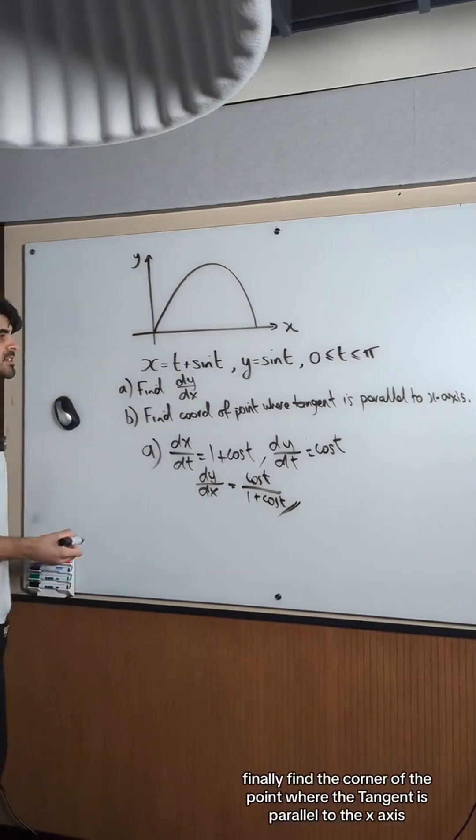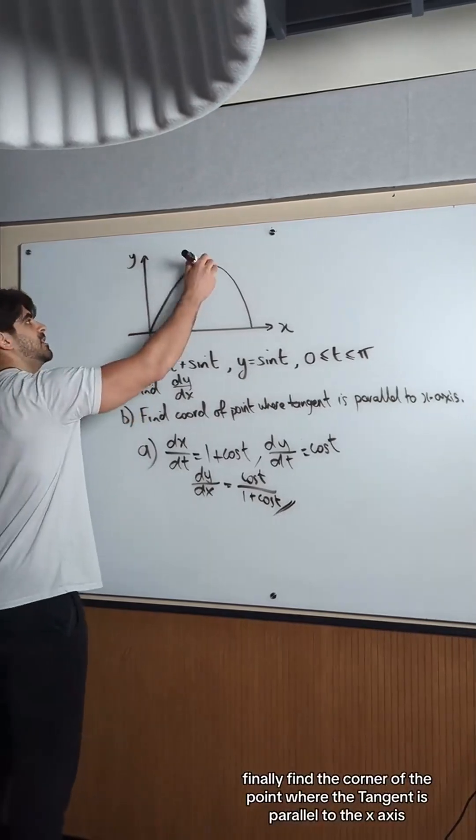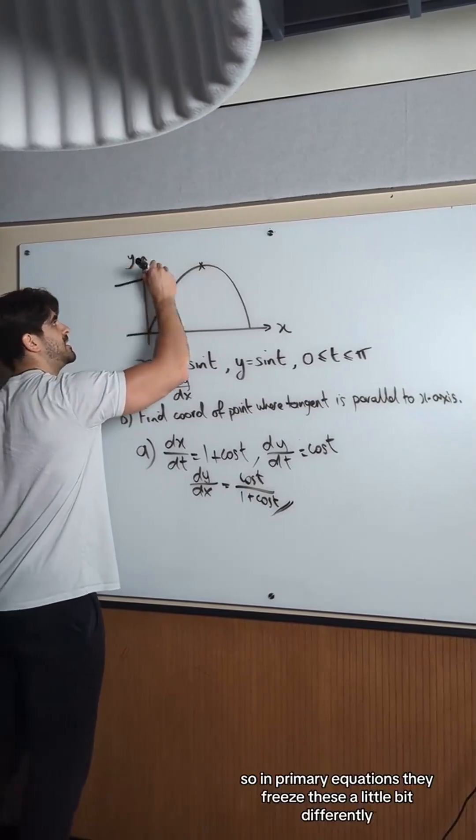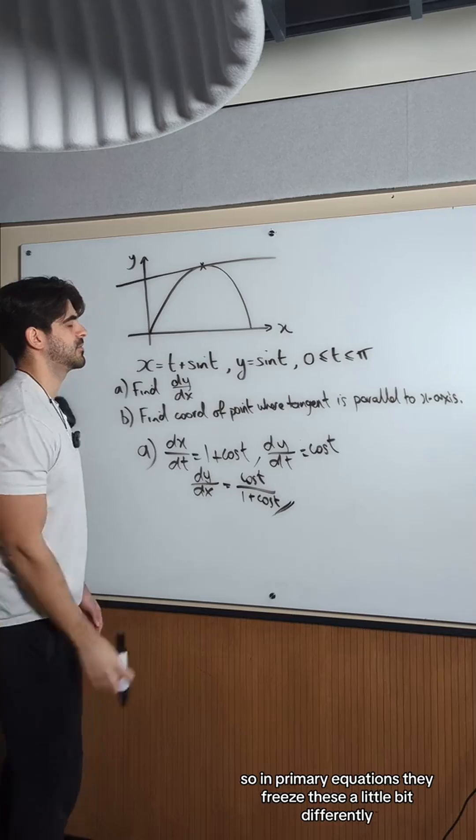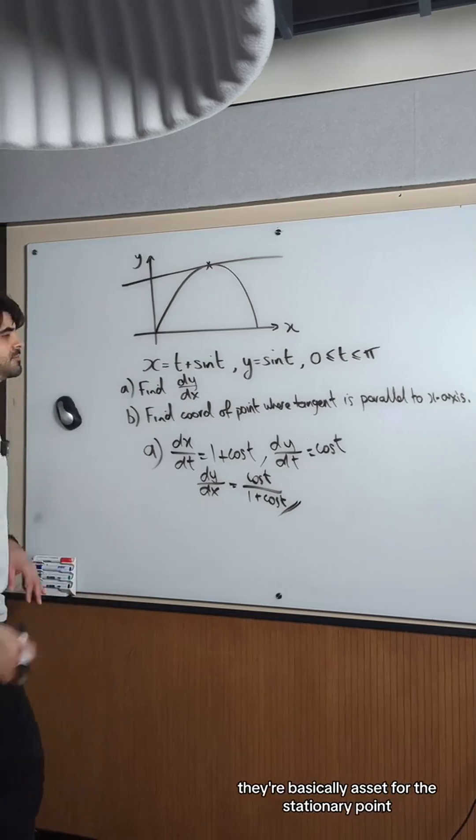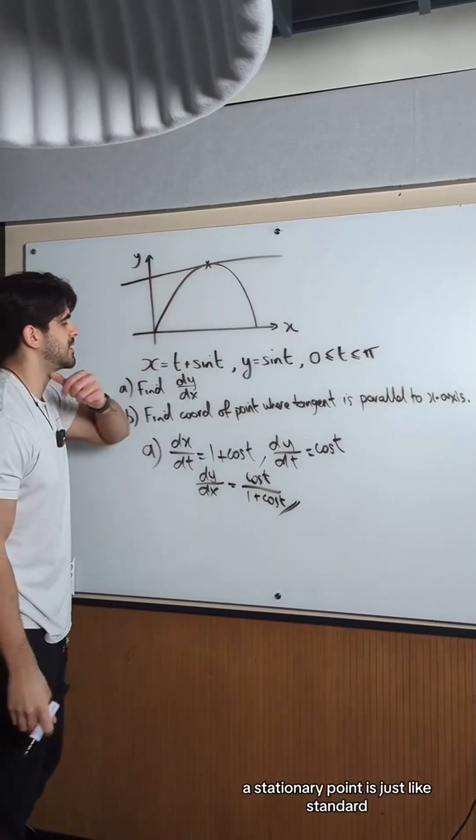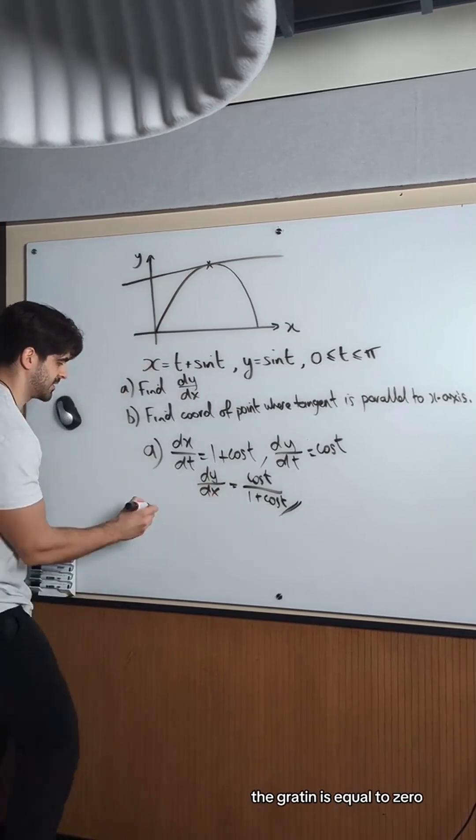Finally, find the coordinate of the point where the tangent is parallel to the x-axis. So in parametric equations, they phrase these a little bit differently. They're basically asking for the stationary point. The stationary point is just like standard - the gradient is equal to 0. So we're just going to make this equal to 0.